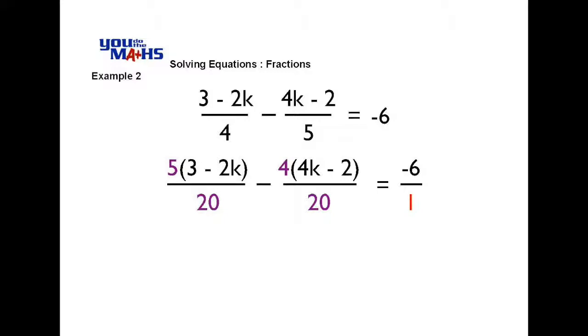Everything in the first fraction gets multiplied by 5 in the top line because it's multiplied by 5 in the denominator. And the second fraction, everything gets multiplied by 4 because the denominator has been multiplied by 4.